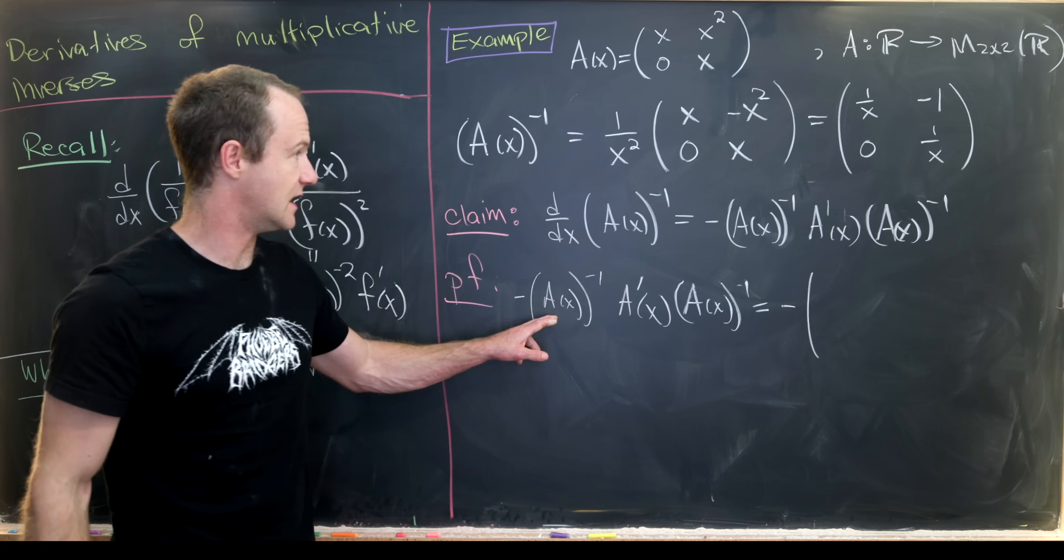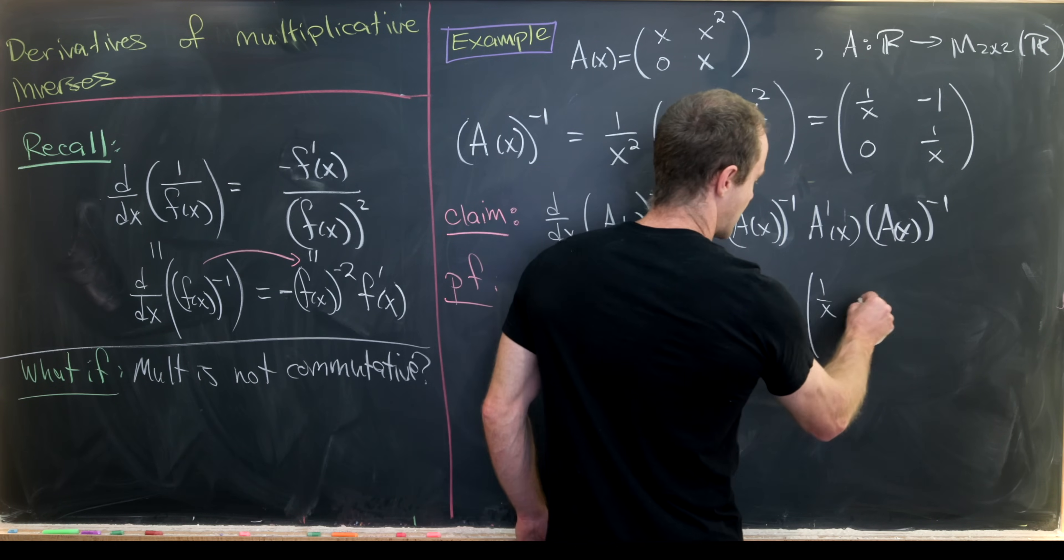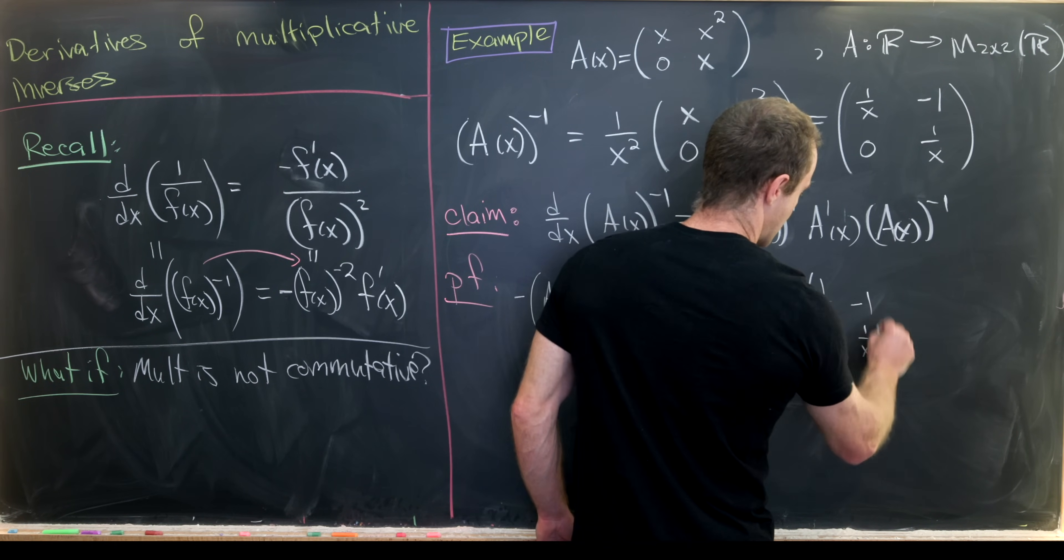That's going to be a minus sign, and then the inverse of our A(x) matrix is 1/x, minus 1, 0, 1/x.